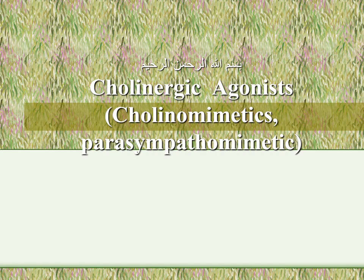Cholinergic neurons also occur in the postganglionic fibers of the Sympathetic Nervous System that terminate or innervate the sweat glands. Additionally, cholinergic neurons occur in the neurons that innervate the skeletal muscles, belonging to the Somatic Nervous System, and also in the Central Nervous System.